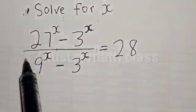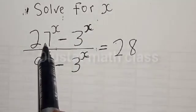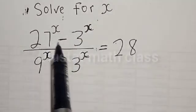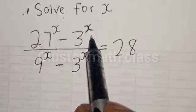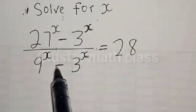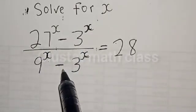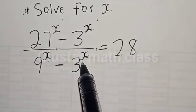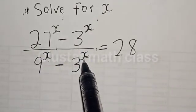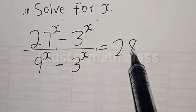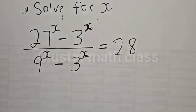Solve for x. 27 raised to power x minus 3 raised to power s, divided by 9 raised to power s minus 3 raised to power s, is equal to 28.